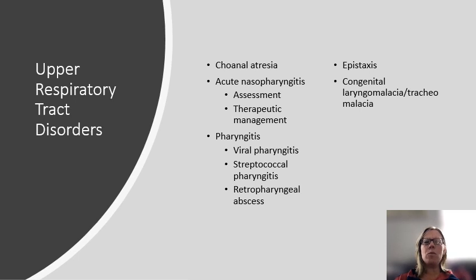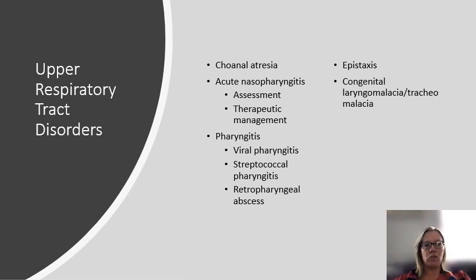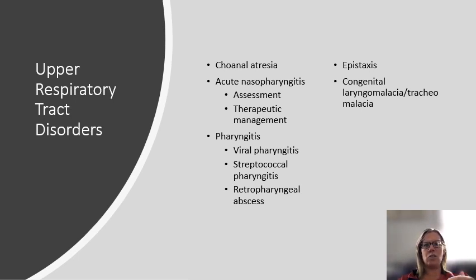Now let's talk about upper respiratory tract disorders. We'll break the respiratory system down into upper and lower respiratory tract disorders. For upper respiratory tract disorders, we have choanal atresia, acute nasopharyngitis, pharyngitis, epistaxis, and congenital laryngomalacia or tracheomalacia.